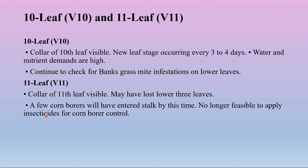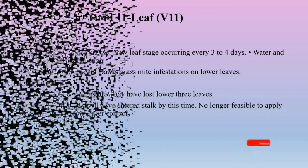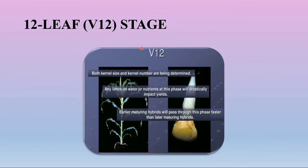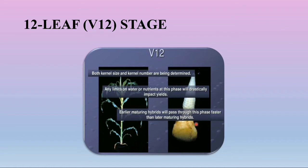Coming to the twelfth leaf stage (V12): both kernel size and kernel number are being determined at this stage. Any limits on water or nutrients at this phase will drastically impact yield. If water and nutrients are insufficient, yields will be reduced, so care should be taken to supply water and nutrients at this stage. Earlier maturity hybrids will pass through this phase faster than later maturing hybrids. The number of kernel rows is already determined, and the top ear is still smaller than the lower ear shoots.